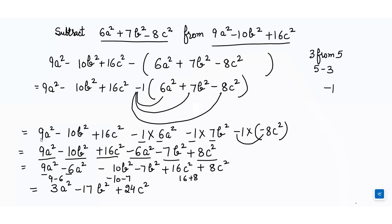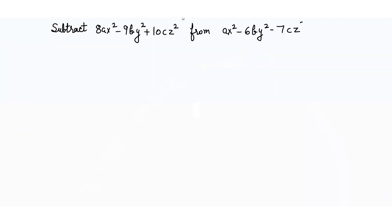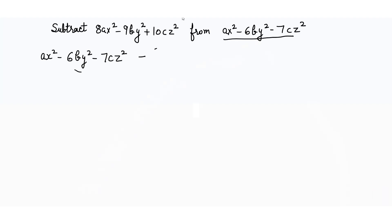Now let's understand another example. Whatever terms are given after 'from', we write them first: ax² - 6by² - 7cz², then minus, and inside the bracket we write: 8ax² - 9by² + 10cz².